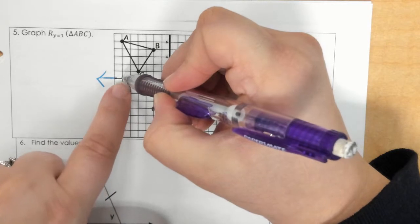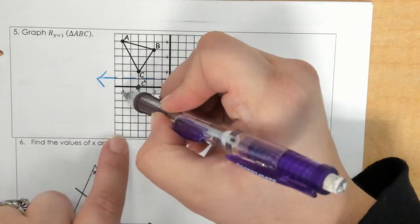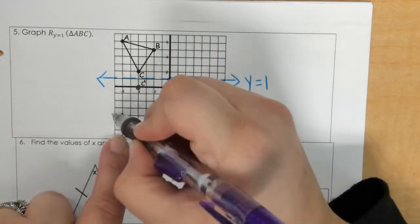And then for a, we go up 1, 2, 3, 4, 5. So 1, 2, 3, 4, 5 down. So a prime.